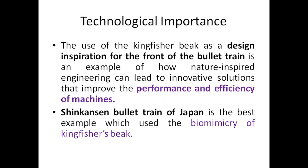Now for the technological importance: the use of the kingfisher beak as a design inspiration for the front part of the bullet train is an example of how nature-inspired engineering leads to innovative solutions that improve performance and efficiency. Bullet trains are known for their speed, and at such speeds, the structure matters greatly because the train experiences a huge amount of air resistance, which must be overcome by a shape similar to the kingfisher beak.